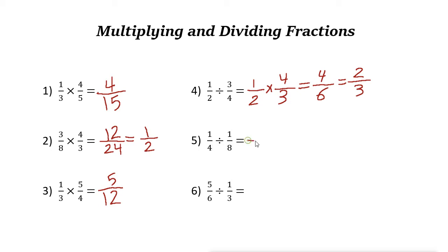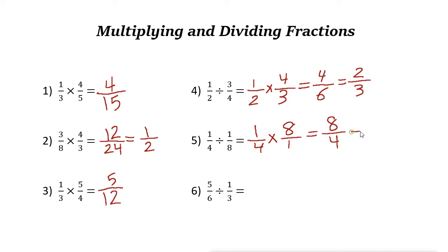Next example: Keep-Change-Flip. Keep the first fraction, change the sign to multiplication, and flip the next one — so 1/8 changes to 8/1. Multiply the numerators: 1 times 8 is 8. Multiply the denominators: 4 times 1 is 4. So 8/4 equals 2.